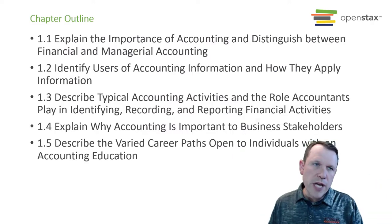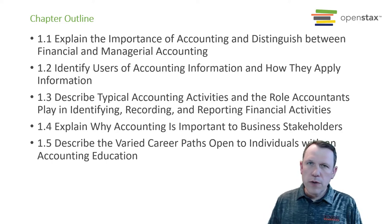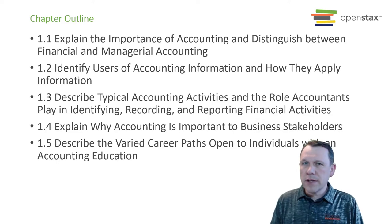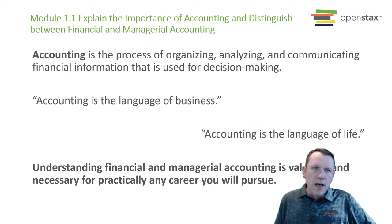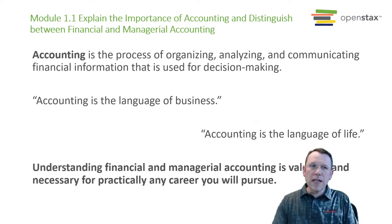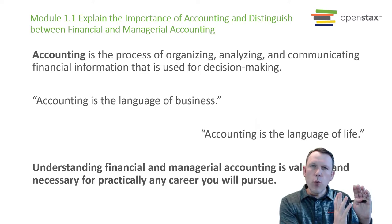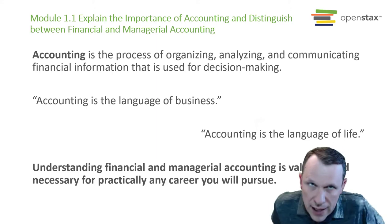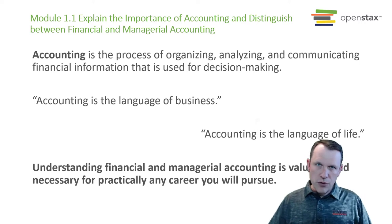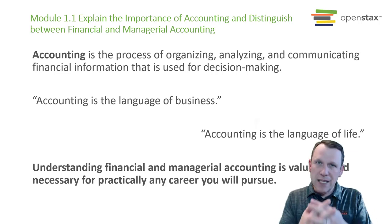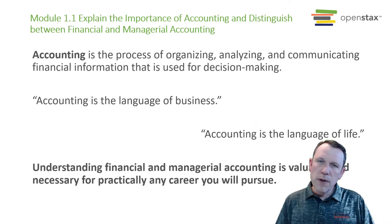This is the chapter outline — what we're going to be learning. One of the important things to note is we're really trying to understand why accounting is important and how society and accounting interface. To begin with, accounting is the process of organizing, analyzing, and communicating financial information that is used for decision making. Accountants organize the numbers — a lot of people think that's all accountants do — but they also analyze, which is important.